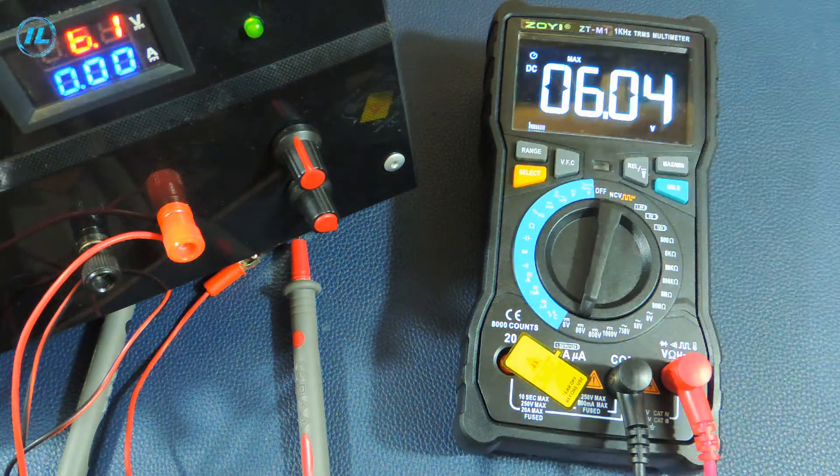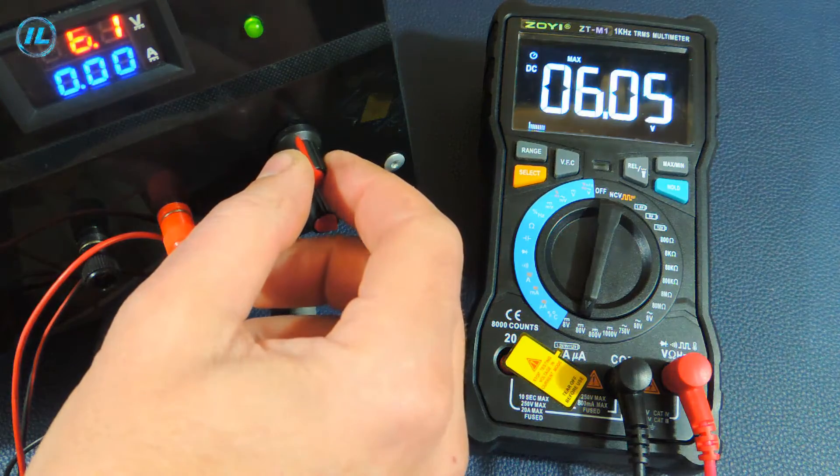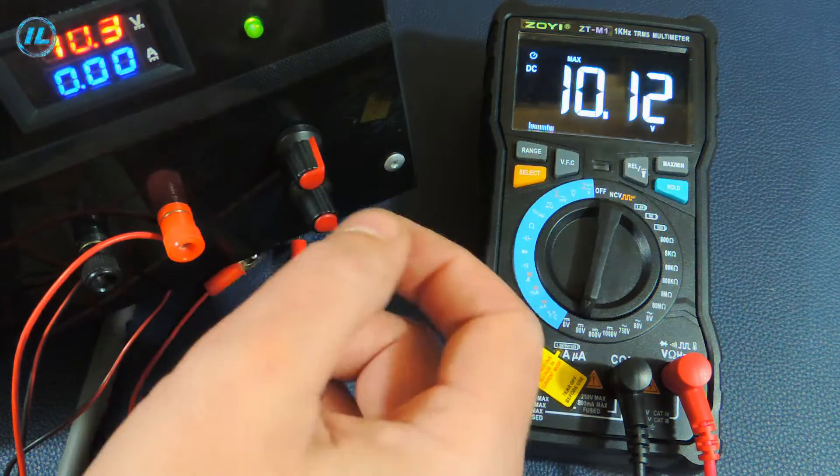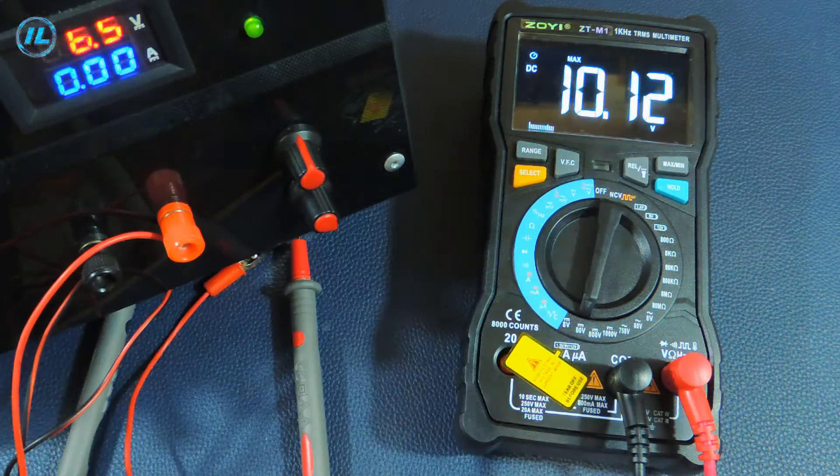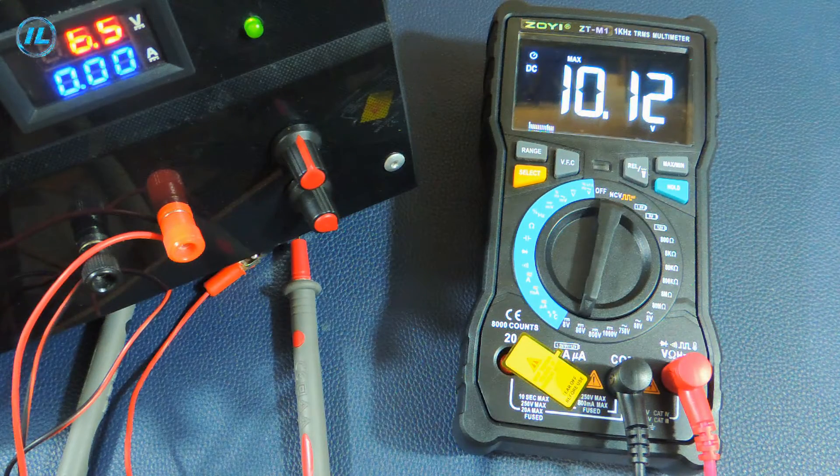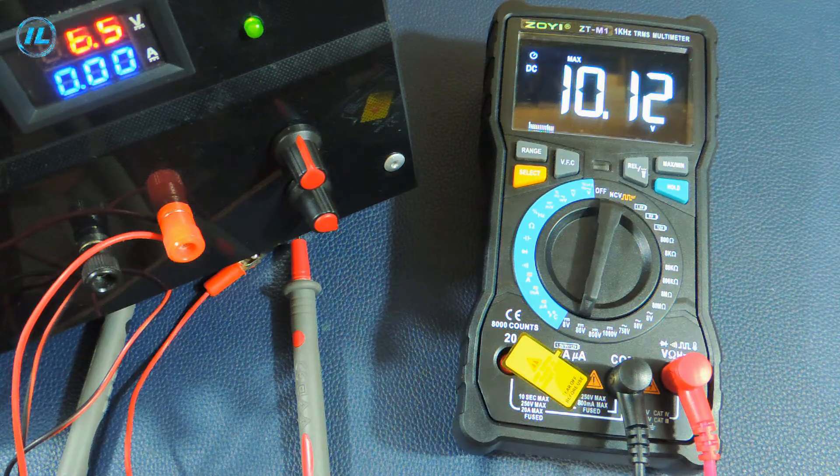While the power supply is connected, I will check the maximum and minimum value measurement function. First, the maximum value measurement mode is activated: 10 volts. Now, if you reduce the voltage on the power supply, the measurement result on the multimeter does not change, because the device has memorized the maximum voltage.